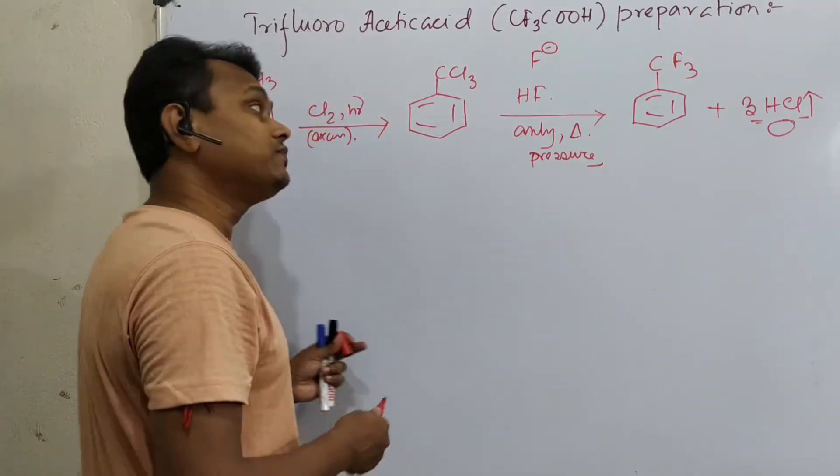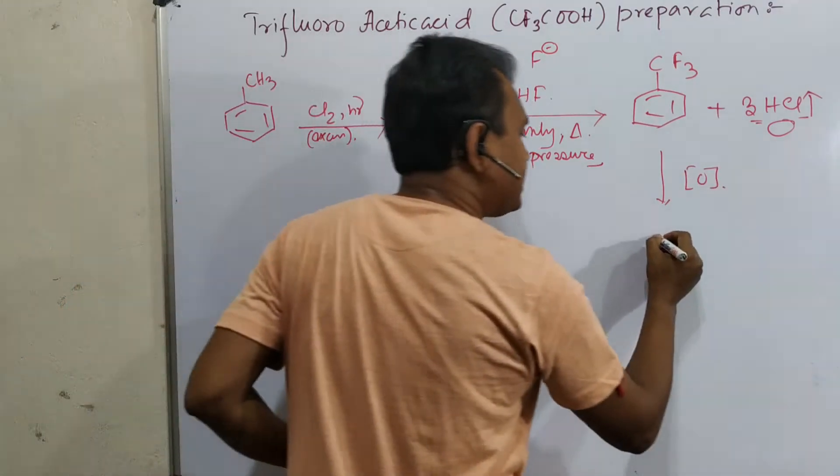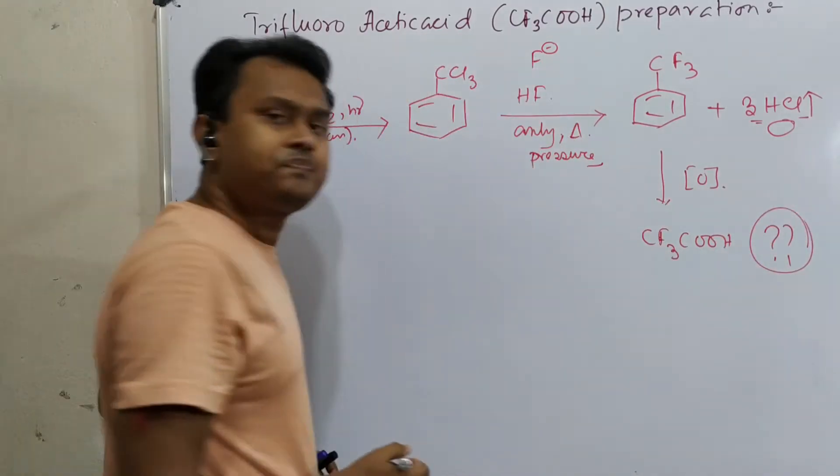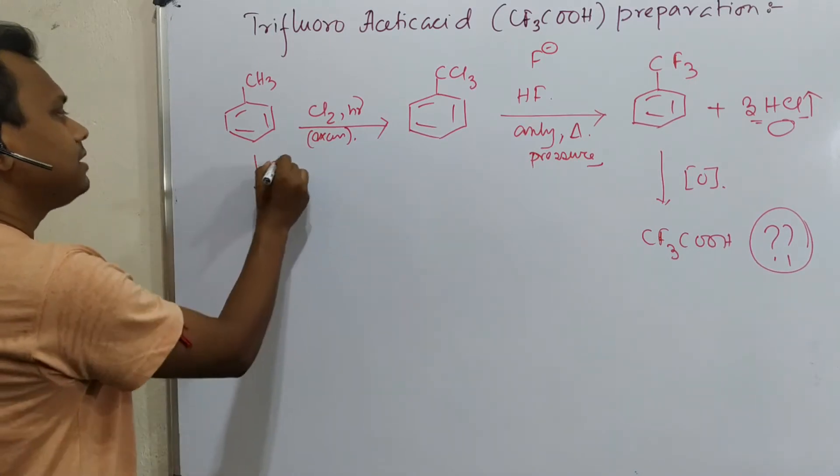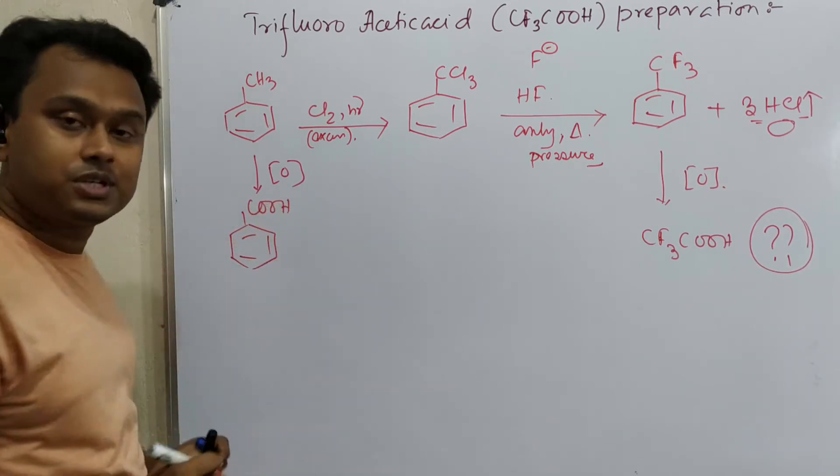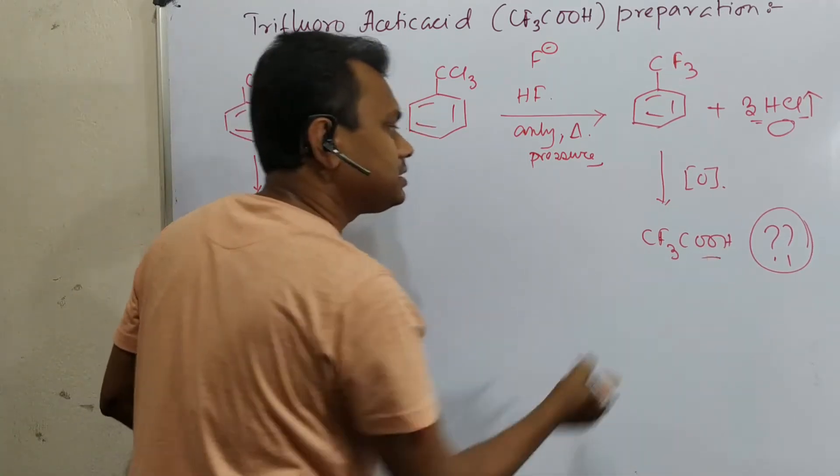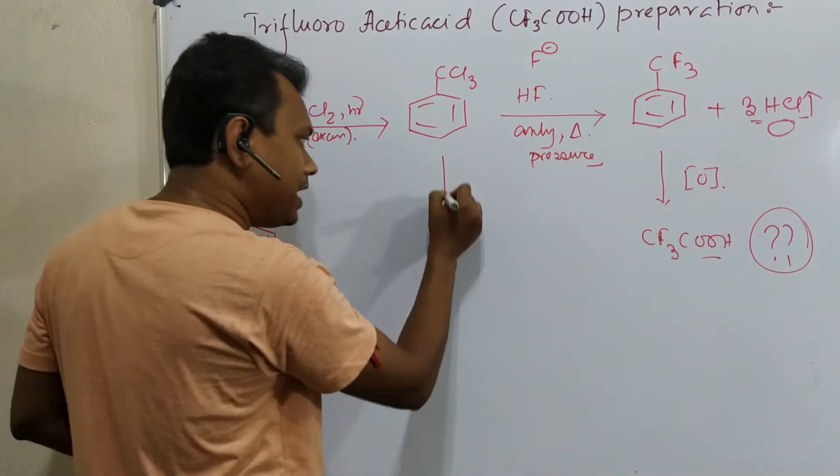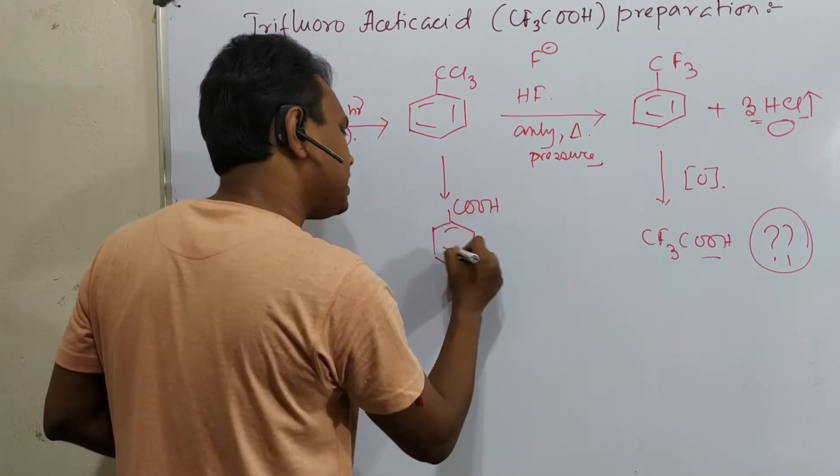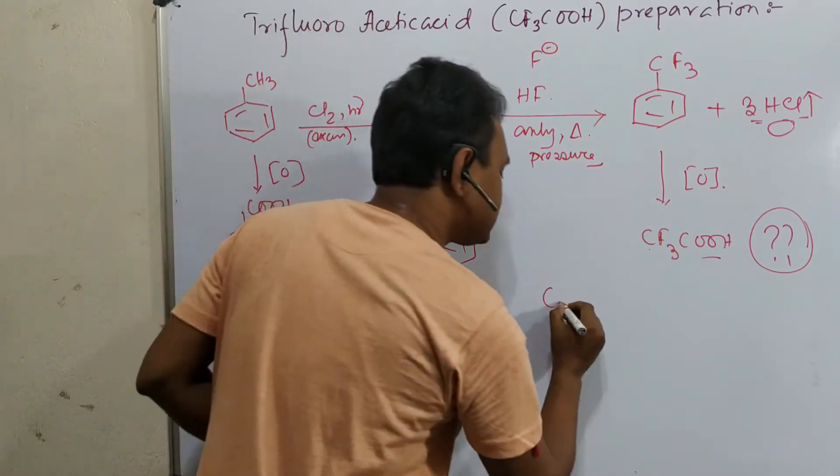From here we got this benzyl CF3. Now we want CF3COOH. In this case, strong oxidation like KMnO4 or dichromate. Now you will say really sir? Because if you oxidize CCl3, you will get benzoic acid. This is very common. Side chain oxidation of aromatic compound results in benzoic acid. Even if you hydrolyze using alkali you will also get benzoic acid salt, and later acidification you get benzoic acid. But in this case, why CF3?